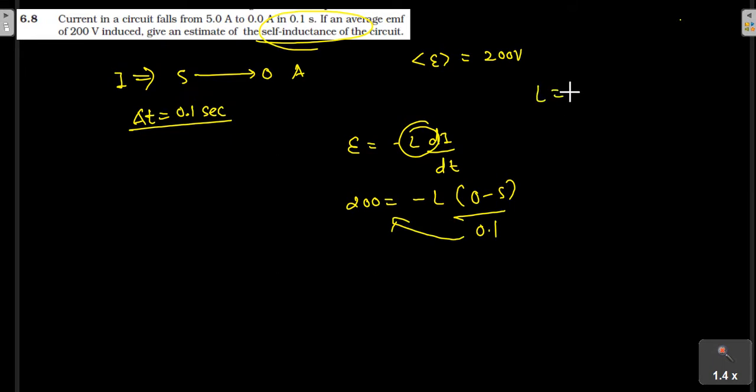l is equal to 200 into 0.1 and this is 5, then l is equal to 2 and this is 4 and this will be your answer, right? l is equal to.